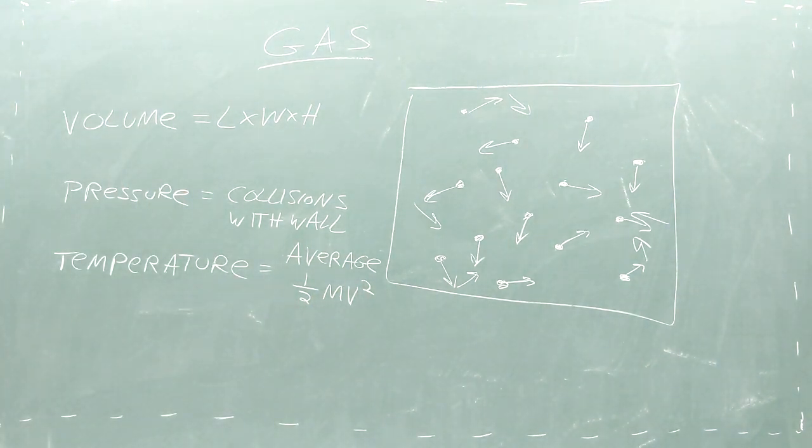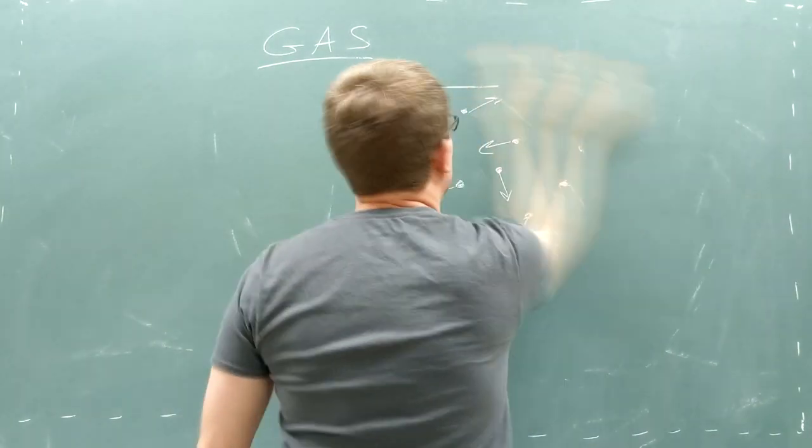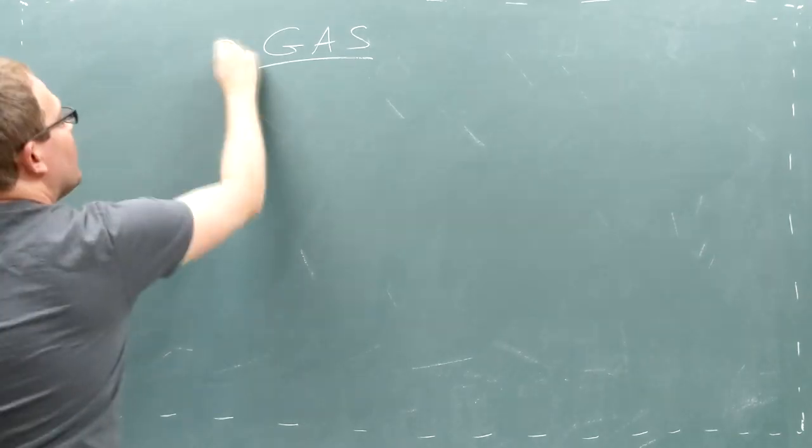When we created a gas in our simulation, we gave each particle a random speed between zero and a maximum value. But what happens when you have two gases, say a red gas and a blue gas, and the two gases interact?